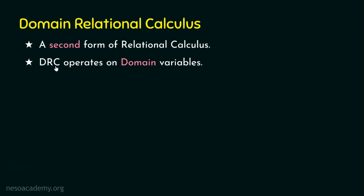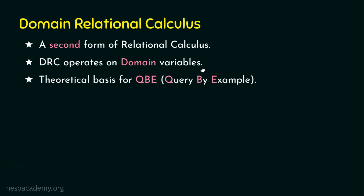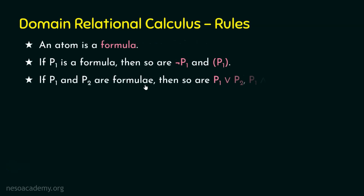When we talk about tuple relational calculus, the output is taken from the entire tuple. Whereas in domain relational calculus, this operates on domain variables — the output will be taken from the domain attributes, not from the tuples. Domain relational calculus is the theoretical basis for QBE, the Query By Example, which is the first graphical query language using visual tables. Many graphical front-end tools today use the idea of QBE. Non-procedural query languages are also referred to as declarative languages. Please go through the rules discussed in the previous lecture.